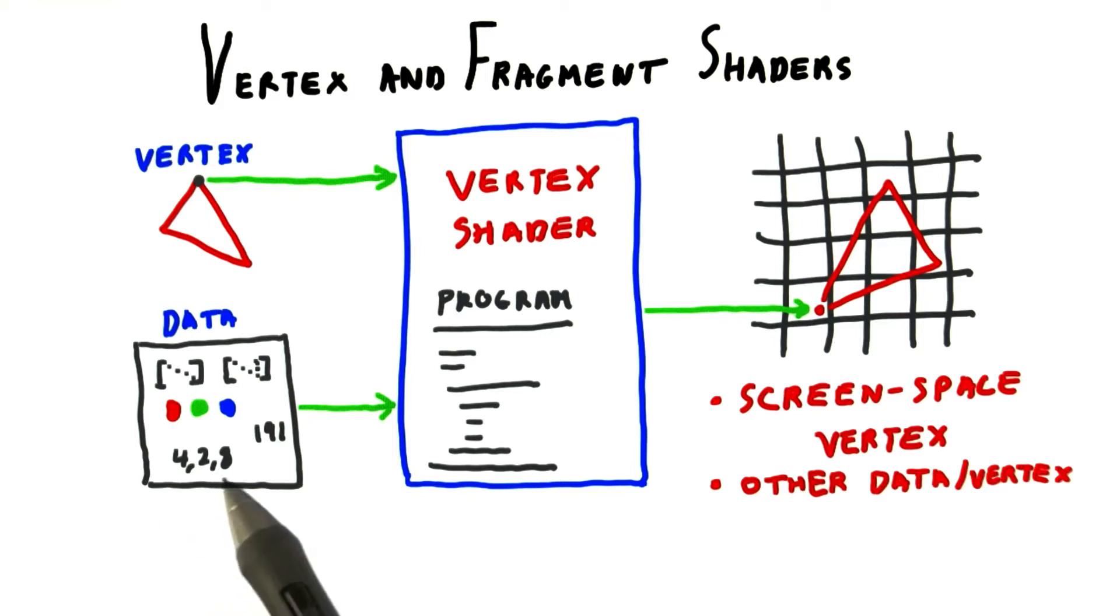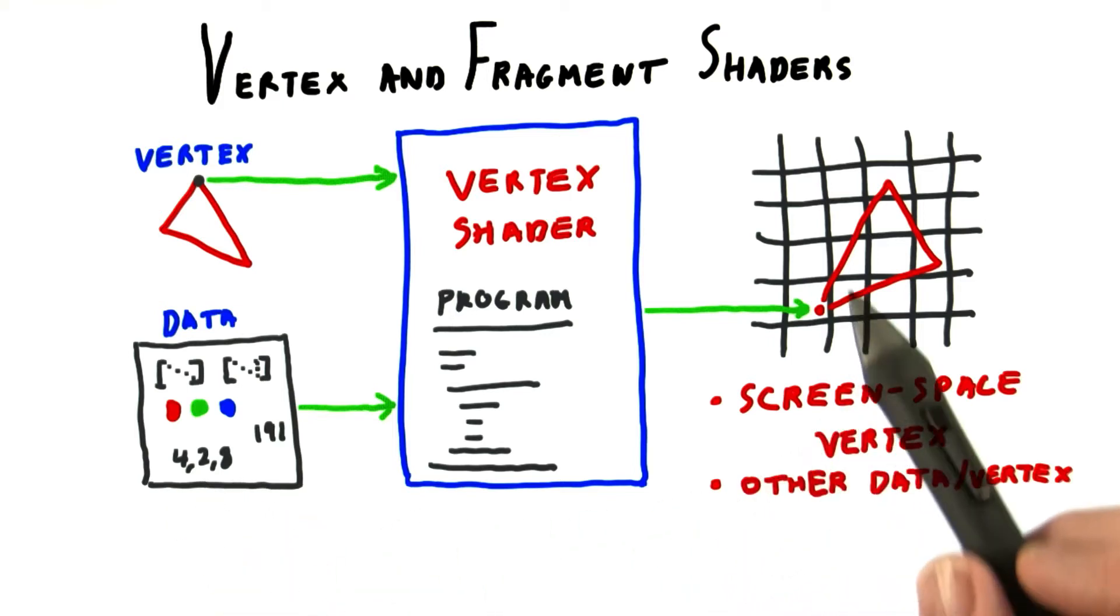For example, matrices or the color of a material could be passed in. The output of the vertex shader is a vertex with the transformed position and possibly other information, such as the normal.